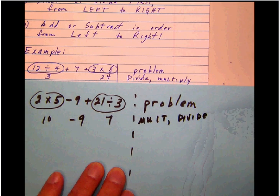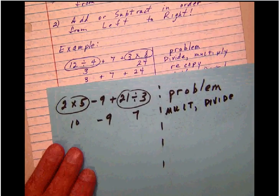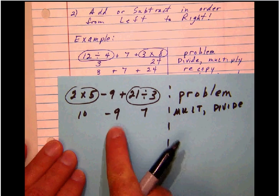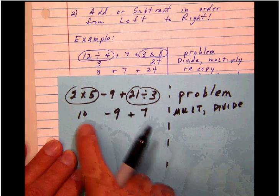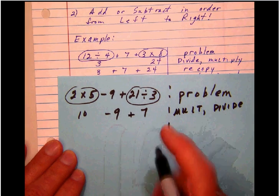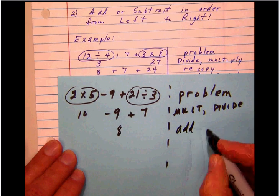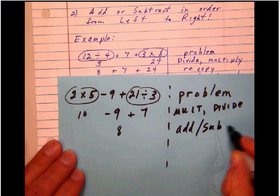Then, of course, we can notice that anything that's left here is to add and subtract. In this case, we're going to go 10 minus 9, and then plus 7, so 10 minus 9 is 1, and 1 plus 7 is 8. So we're just going to add and subtract in the order in which they occur from left to right, and we'll have our problem.